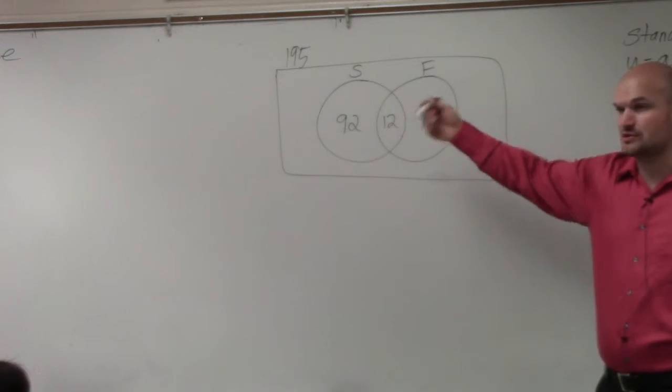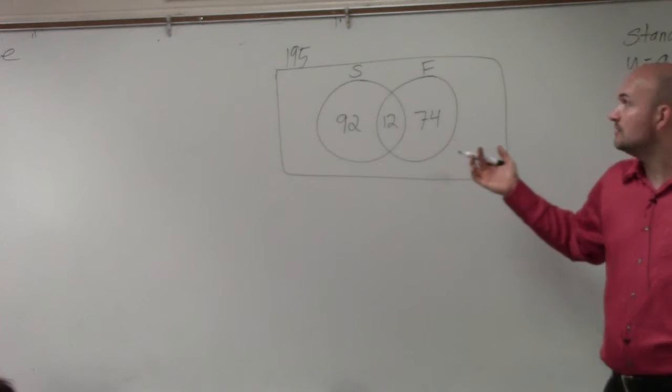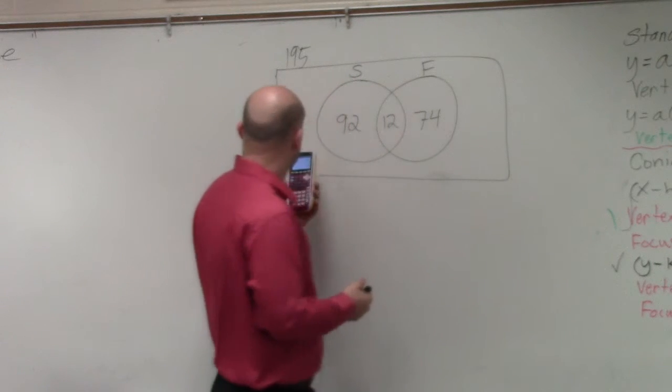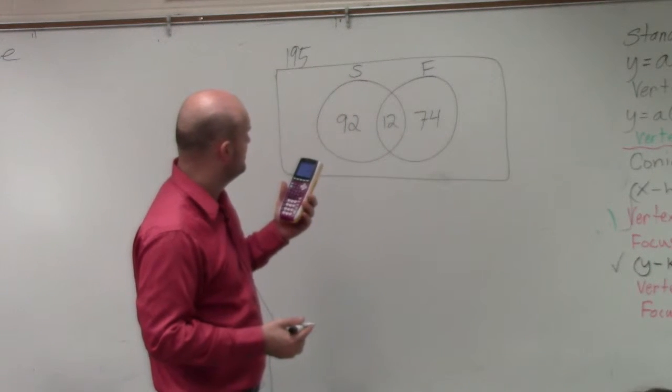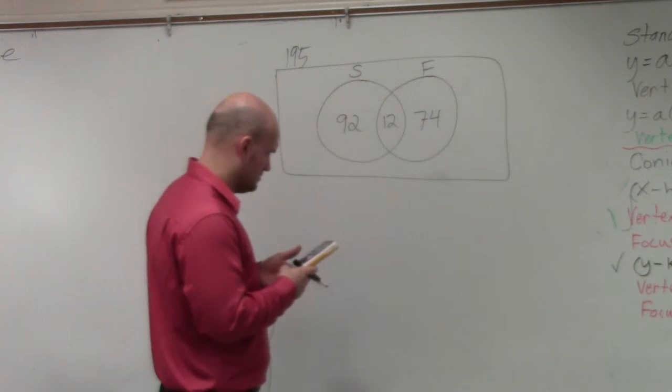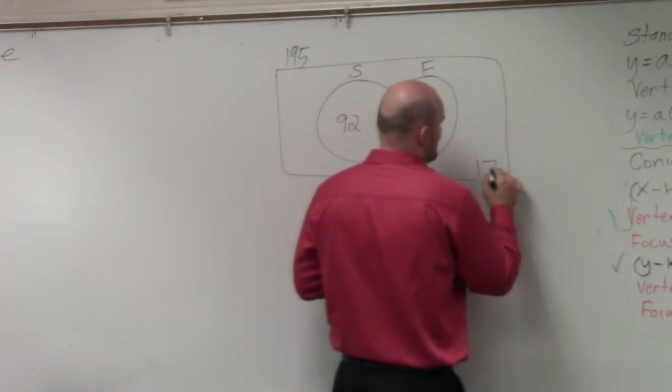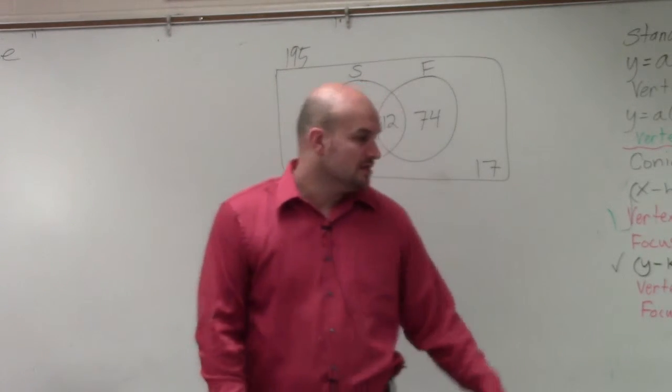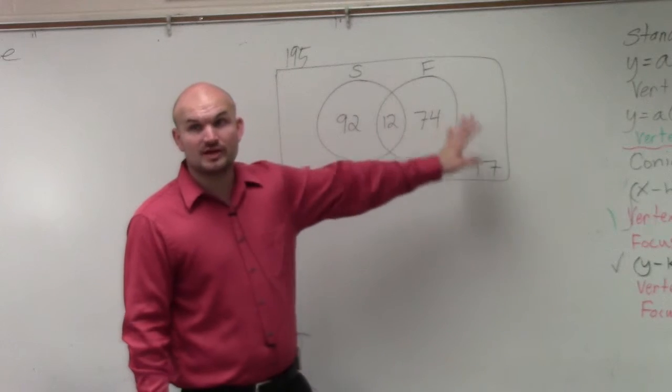Well, we have 195 students. So how do we represent the other amount of the students? Well, that number of students is going to be 17. Those are going to be represented outside of your Venn diagram. So those would be representing students that are not taking Spanish or French.